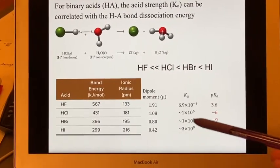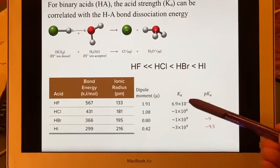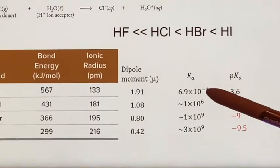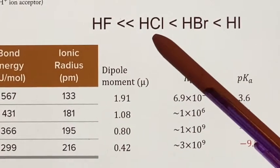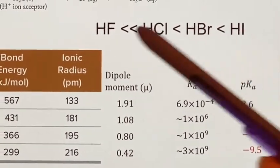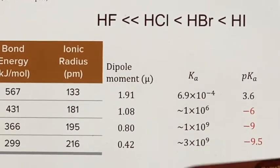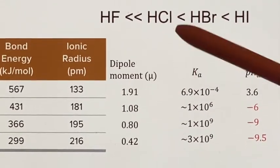If you start looking at these numbers, there is a big jump between the hydrofluoric and the hydrochloric. These are all strong acids, but hydrofluoric is a weak acid. So what's going on here?